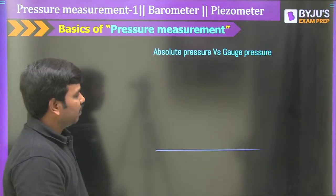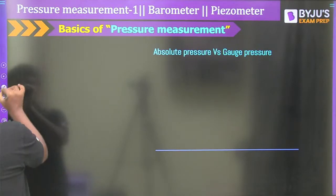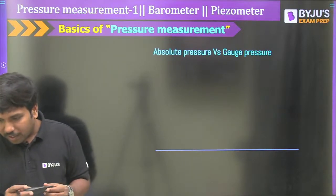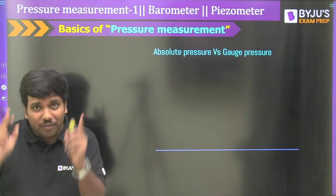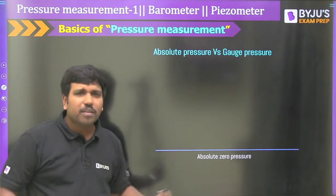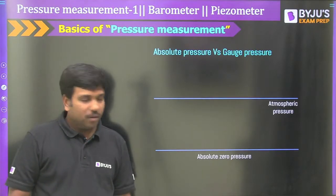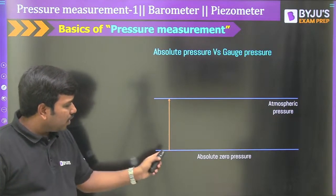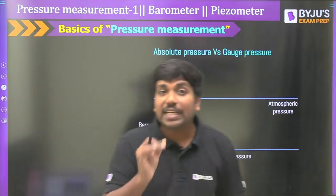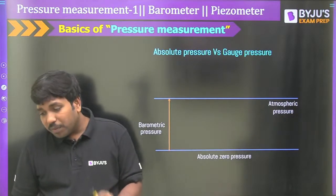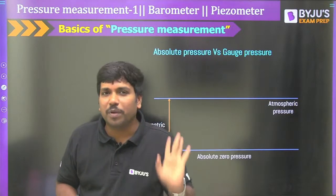Let me explain the absolute pressure versus gauge pressure chart. Consider zero as absolute zero pressure. Atmospheric pressure measured by a barometer is called barometric pressure — barometric pressure is simply atmospheric pressure. If gauge pressure is positive and added to atmospheric pressure, the absolute pressure will be more than atmospheric pressure. If gauge pressure is negative — vacuum — absolute pressure will be less than atmospheric.